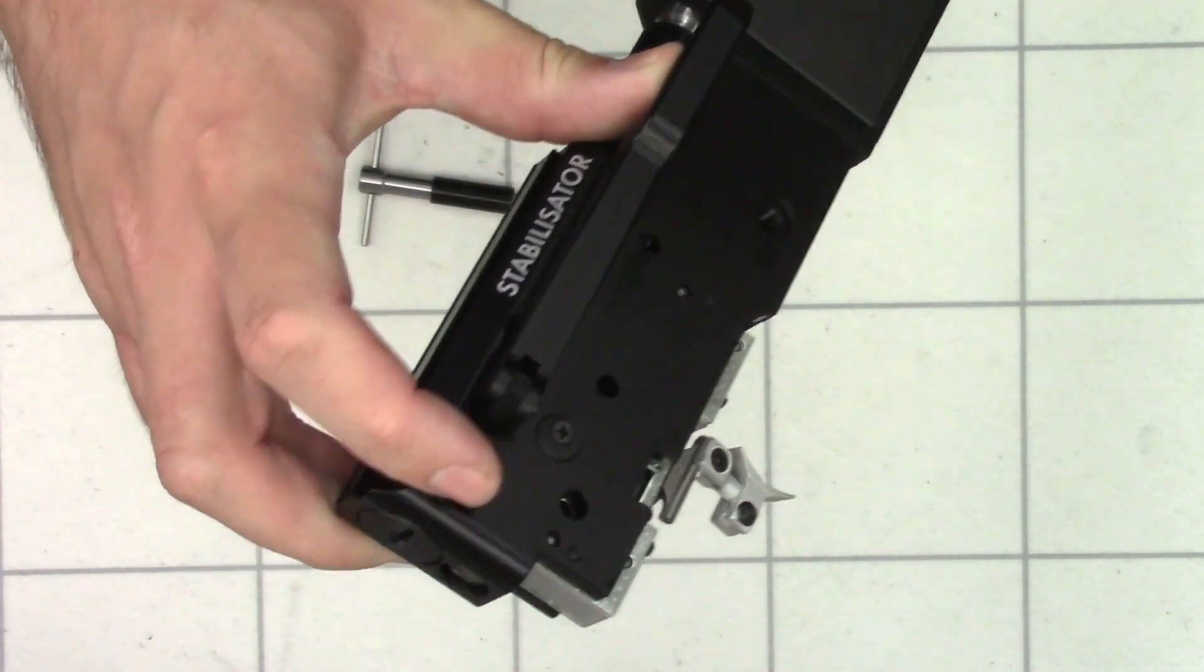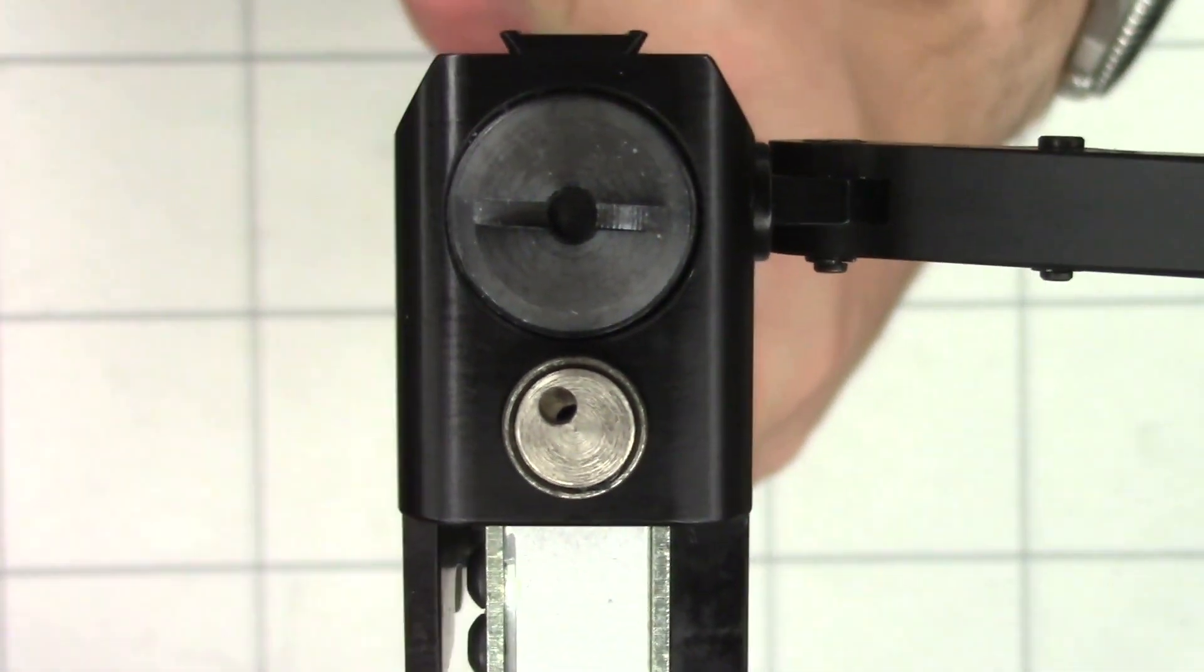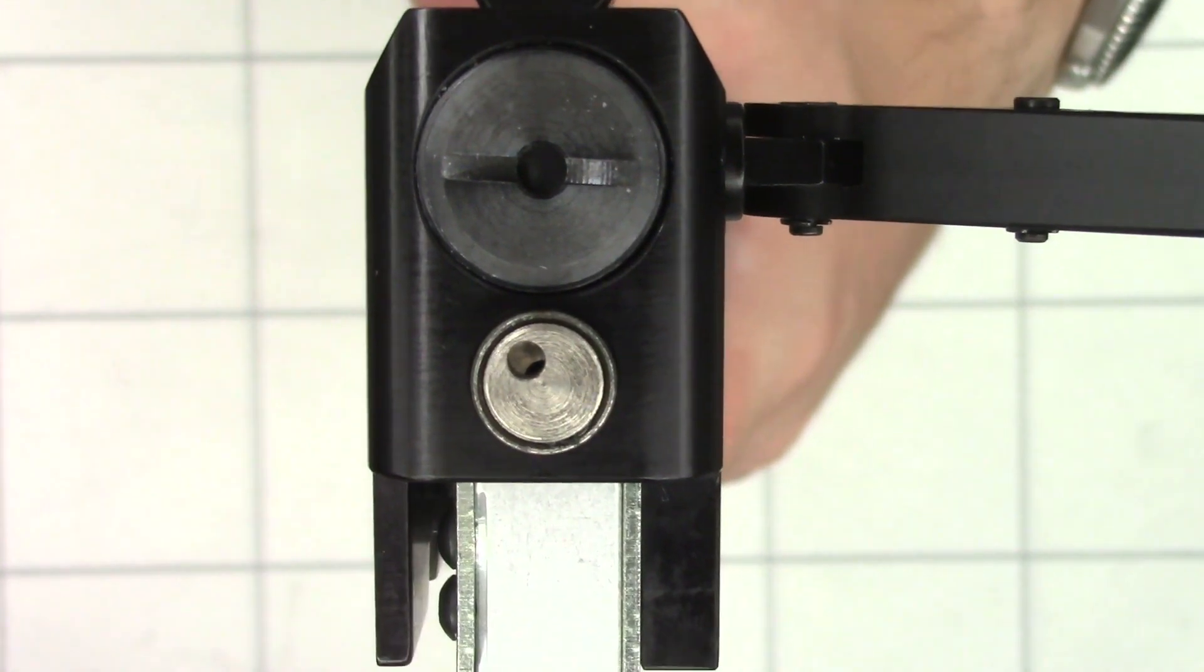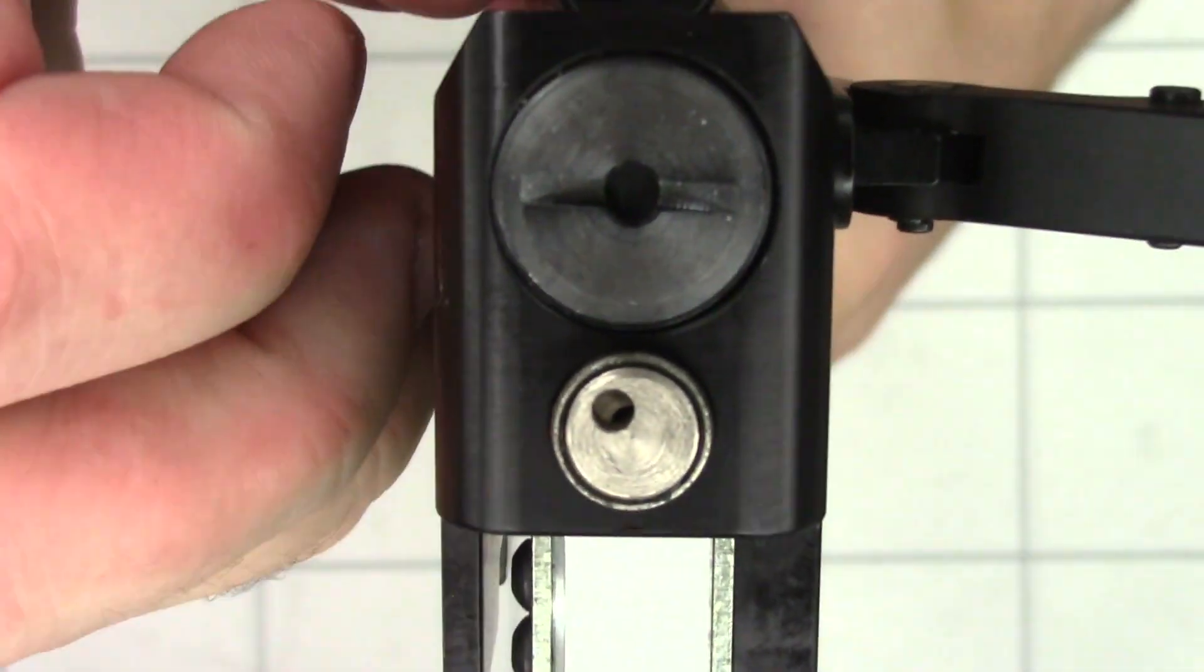So the first thing we did have to do is loctite the little hammer spring adjuster here. So if we take a look at the back here, the one thing we did have to do after adjusting the power was put a small amount of blue loctite around this threaded portion of the hammer spring adjuster.